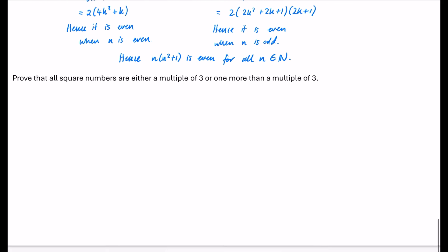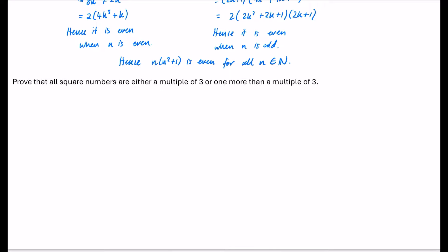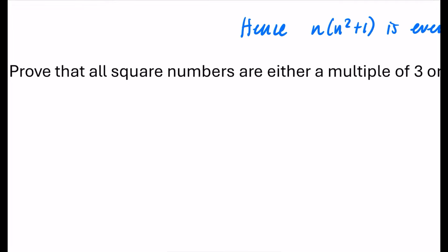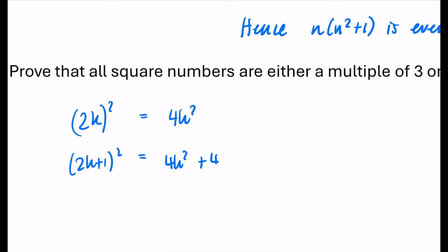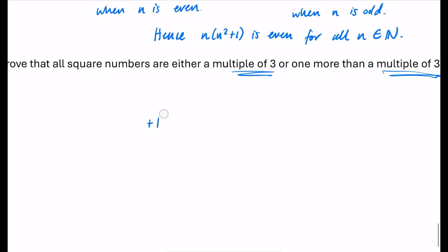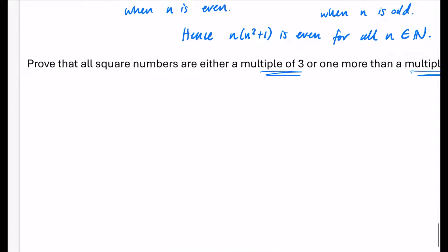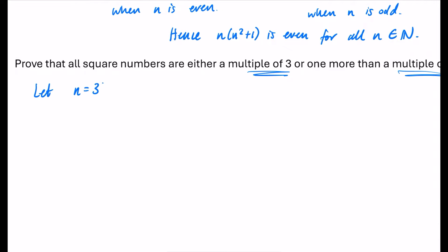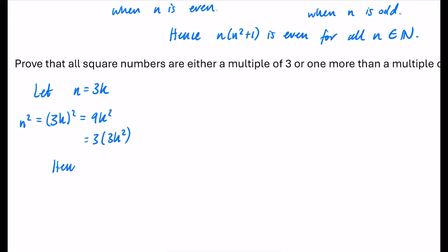The last question is again a proof by exhaustion. Prove that all square numbers are either a multiple of 3 or one more than a multiple of 3. If we just used even and odd numbers, we'd only get 4k squared or 4k squared plus 4k plus 1, which gives nothing related to 3. So I'll split numbers differently. Let n equal a multiple of 3, i.e. n equals 3k. Then n squared equals 9k squared, which equals 3(3k squared). Hence a multiple of 3.